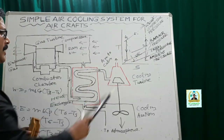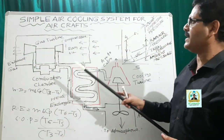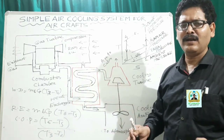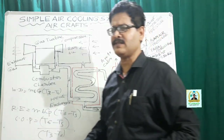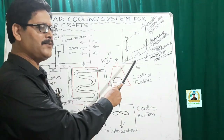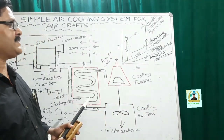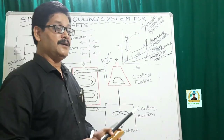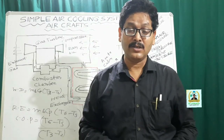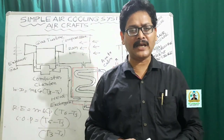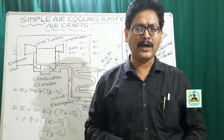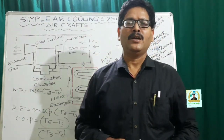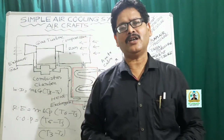Those conditions must be considered while computing the work done as well as the refrigerating effect. With this, I sincerely believe that your concept about the simple air cooling system for aircraft is crystal clear, as we have considered the system along with the gas turbine cycle and discussed it using the temperature-entropy diagram. I've also given hints about the changes likely to take place if you consider the effect of irreversibilities during compression and expansion. If you have any doubts, please put your questions and I will try to answer. Please subscribe to my YouTube channel Ready Space, share this video with your friends and relatives, and hope to see you soon for another lecture.